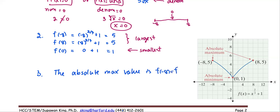which is the same as the function value at positive eight equals five, and the absolute minimum value is the function value at zero, or the value one.